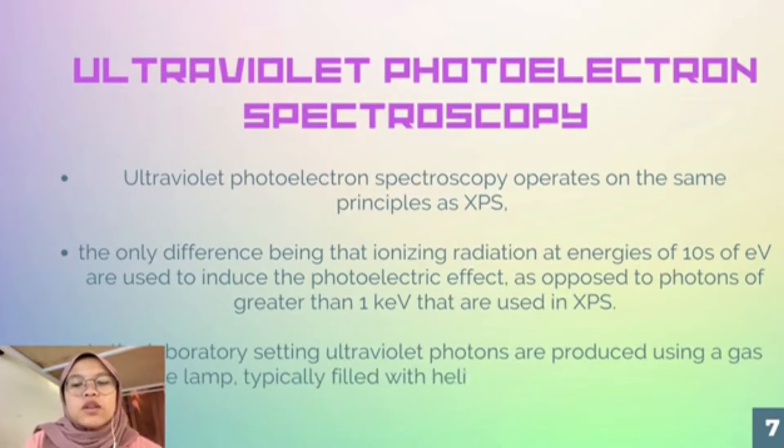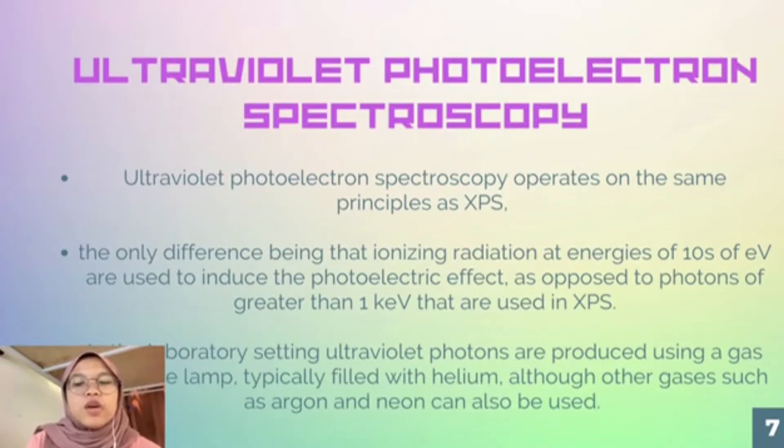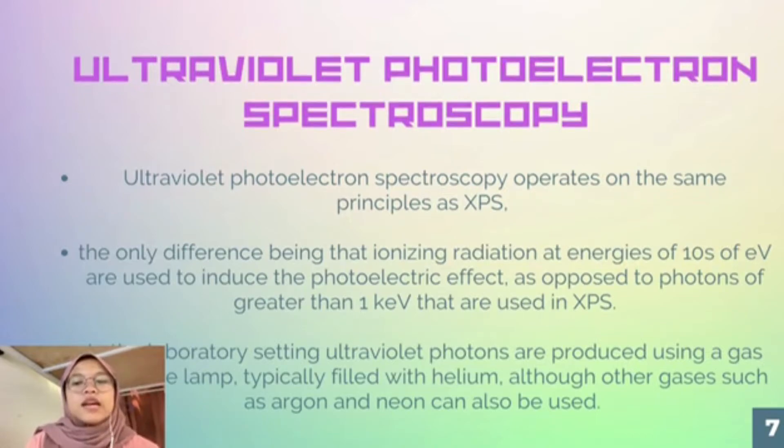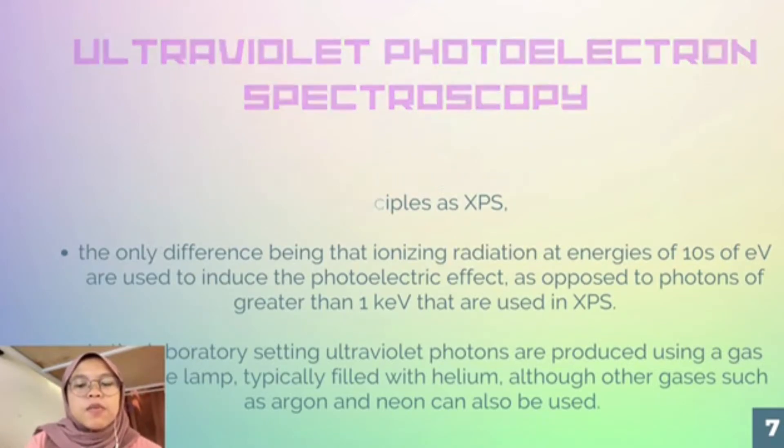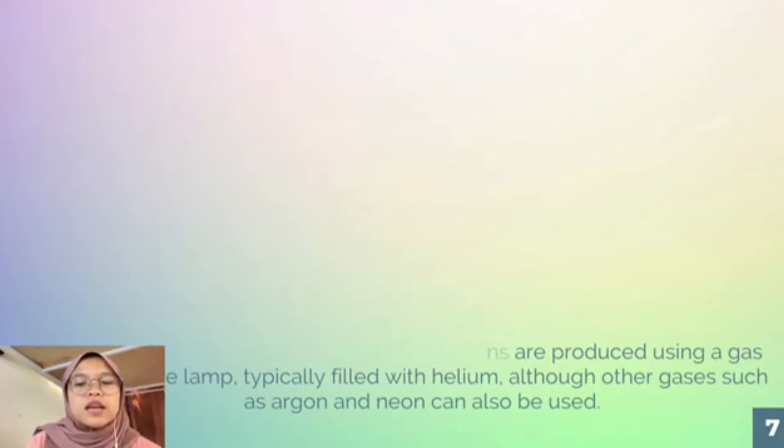In UPS, the photon interacts with valence levels of molecules or solids leading to ionization by removal of one of these valence electrons. The kinetic energy distribution of the emitted photoelectrons, for example, the number of emitted photoelectrons as a function of the kinetic energy, can be measured using any appropriate electron energy analyzer and a photoelectron spectrum can thus be recorded.